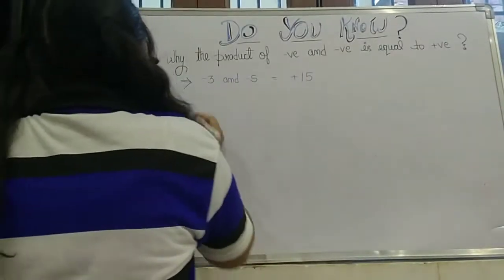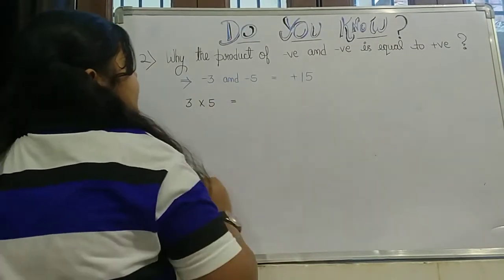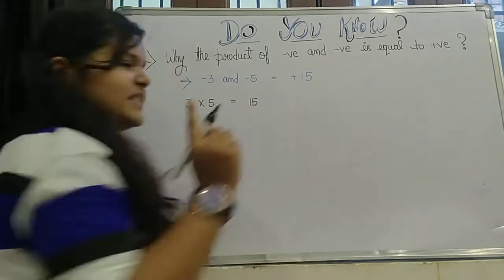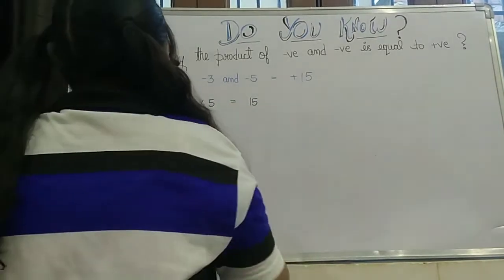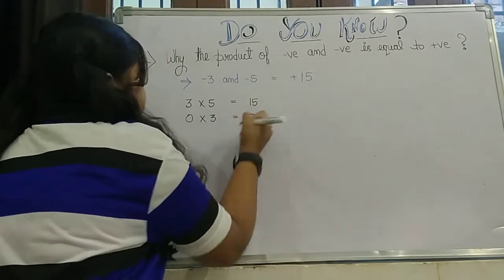So first it's comforting that 3 into 5 is equal to 15. This thing is clear. Second thing: 0 into 3 is equal to 0.